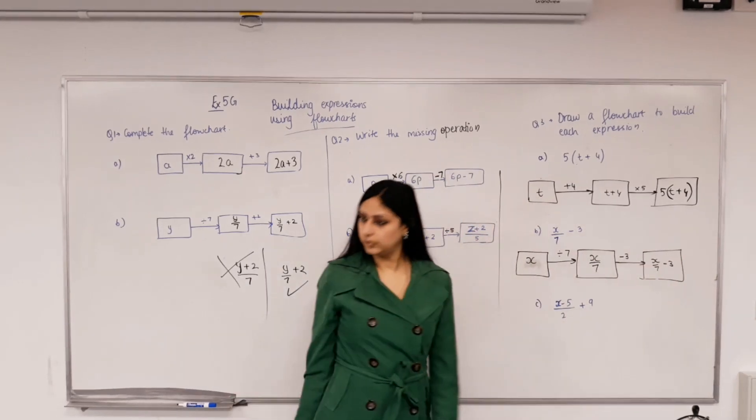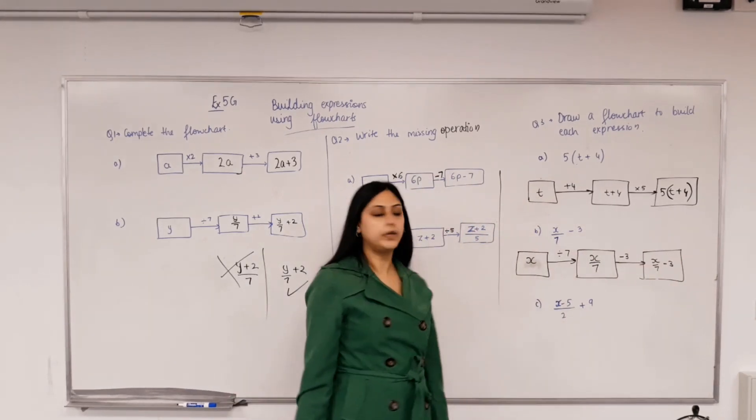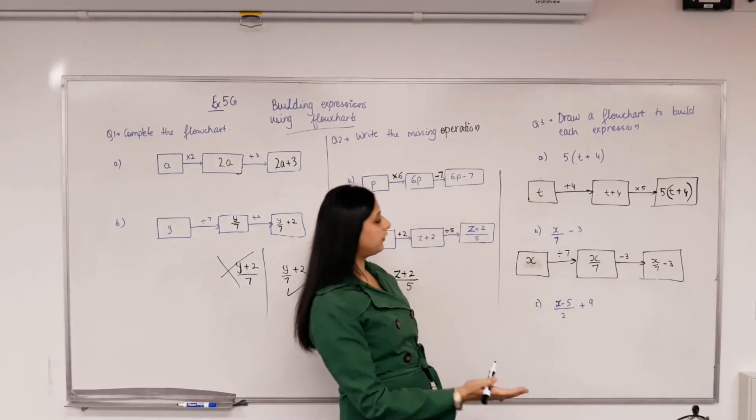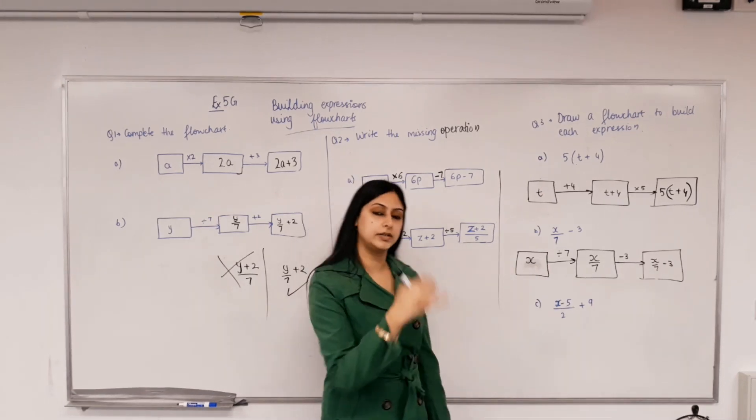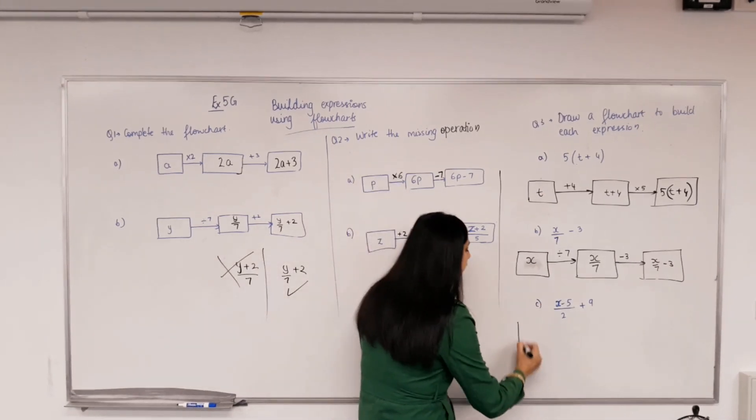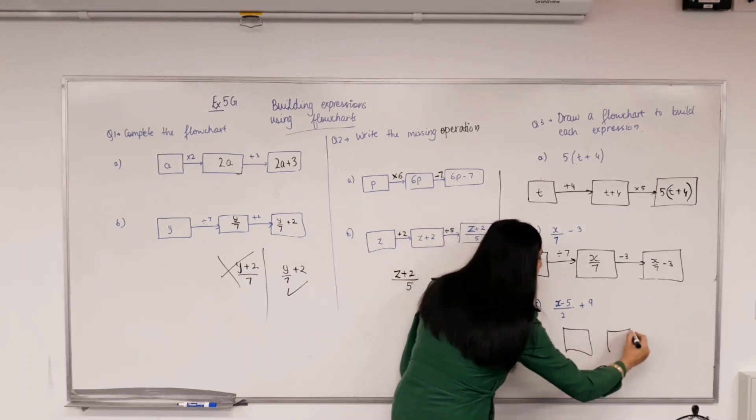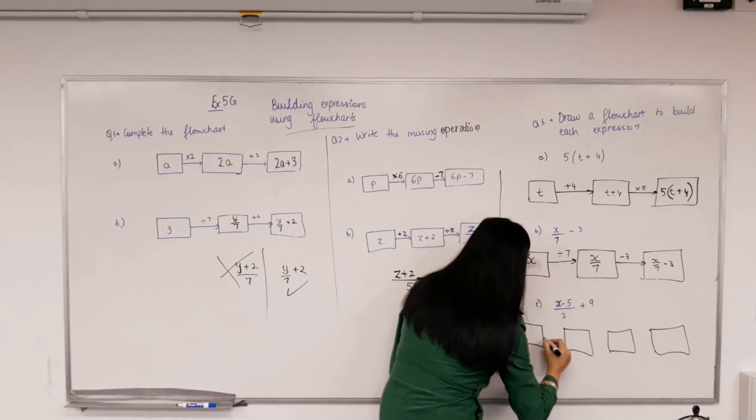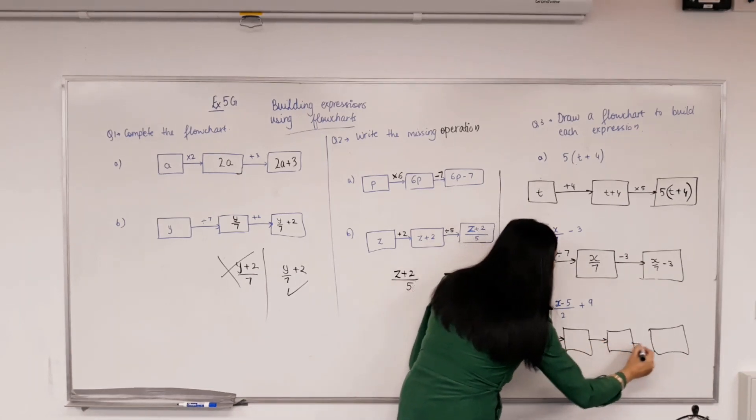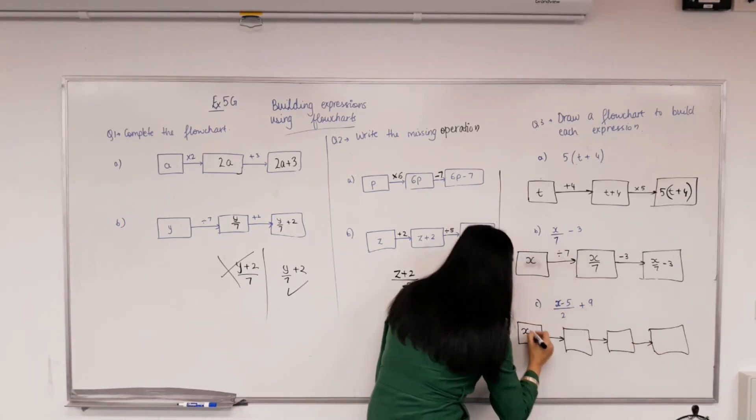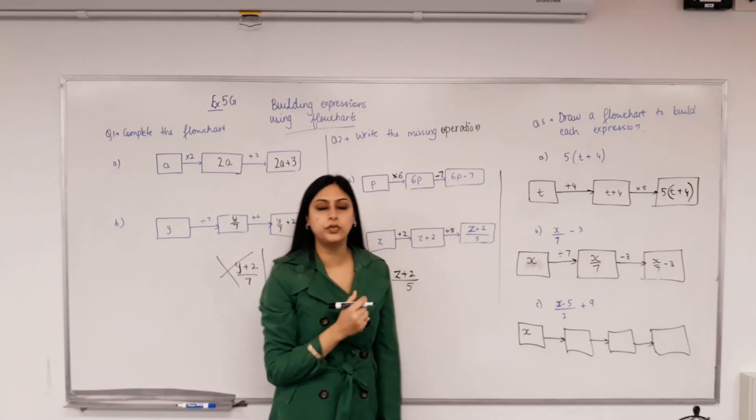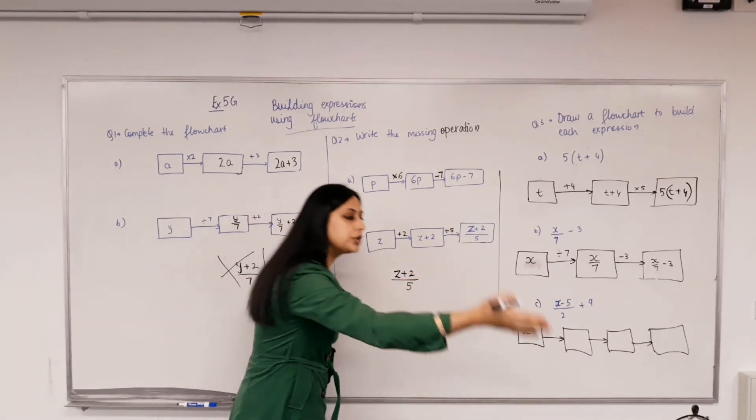Last one. So there's take away 5, there's a plus 9, there's a division by 2, but what's the pronumeral that we started with? X. Okay. What is the first thing that we've done to x? So we added 9 first or divided by 2 first, what do you think? Minus 5. Who agrees? Perfect, isn't that the first thing?